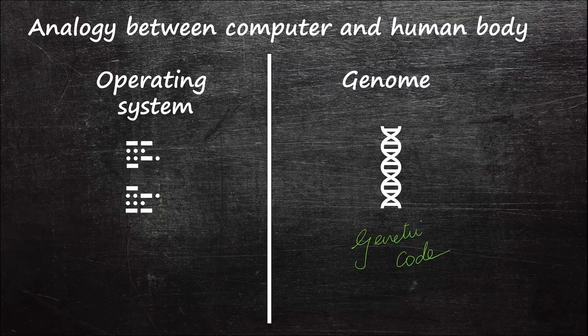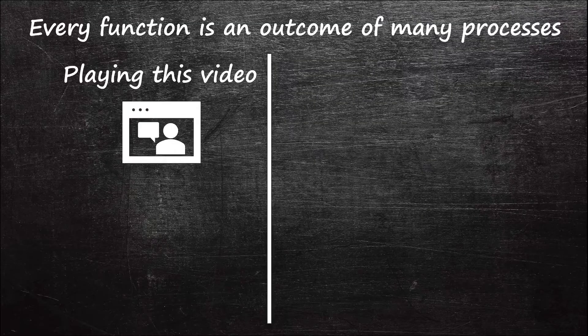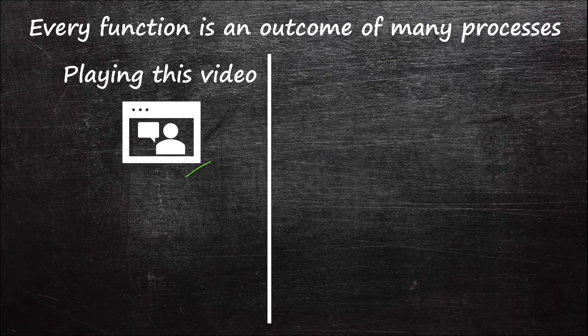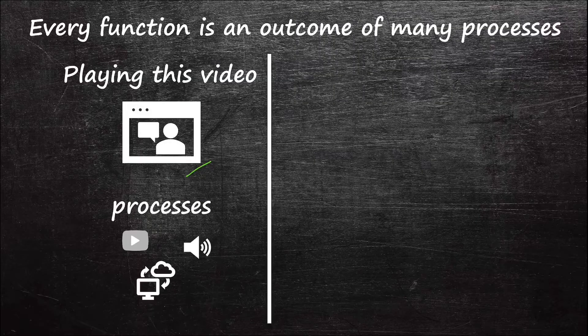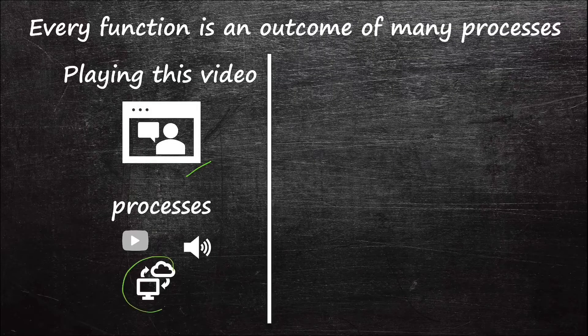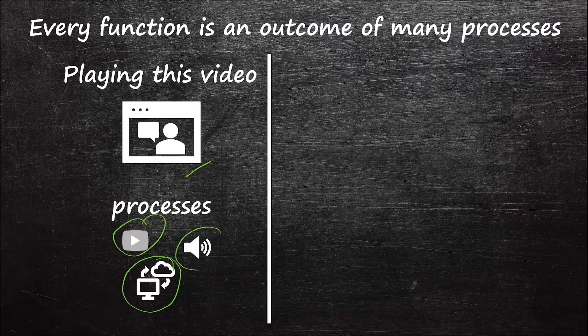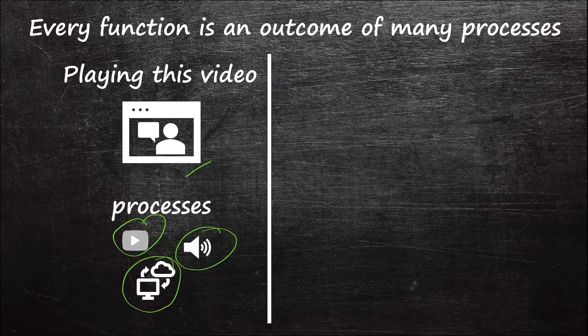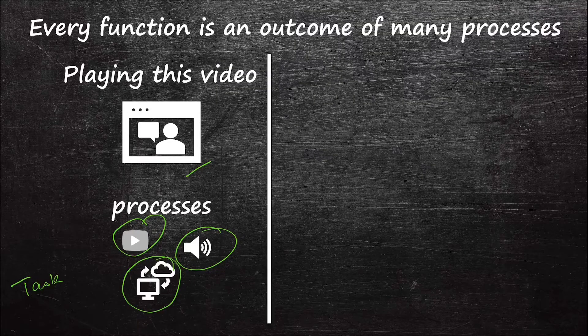Let us consider an example. One of the functions performed by the computer in front of you now is playing this video, and this function is an outcome of multiple underlying processes like downloading the video, decoding it, producing the output to the screen and the speakers, and so on. If you open the task manager, you will see the list of processes running at all times.